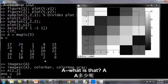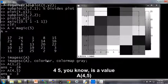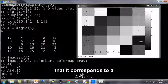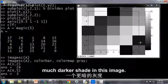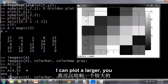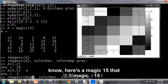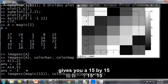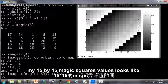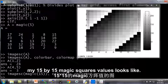And the small value, A, 4, 5, is the value 3 over here. That corresponds, you can see on my color bar, that corresponds to a much darker shade in this image. So here's another example I can plot, larger. Here's a magic 15. That gives me a 15 by 15 magic square. And this gives me a plot of what my 15 by 15 magic square values look like.